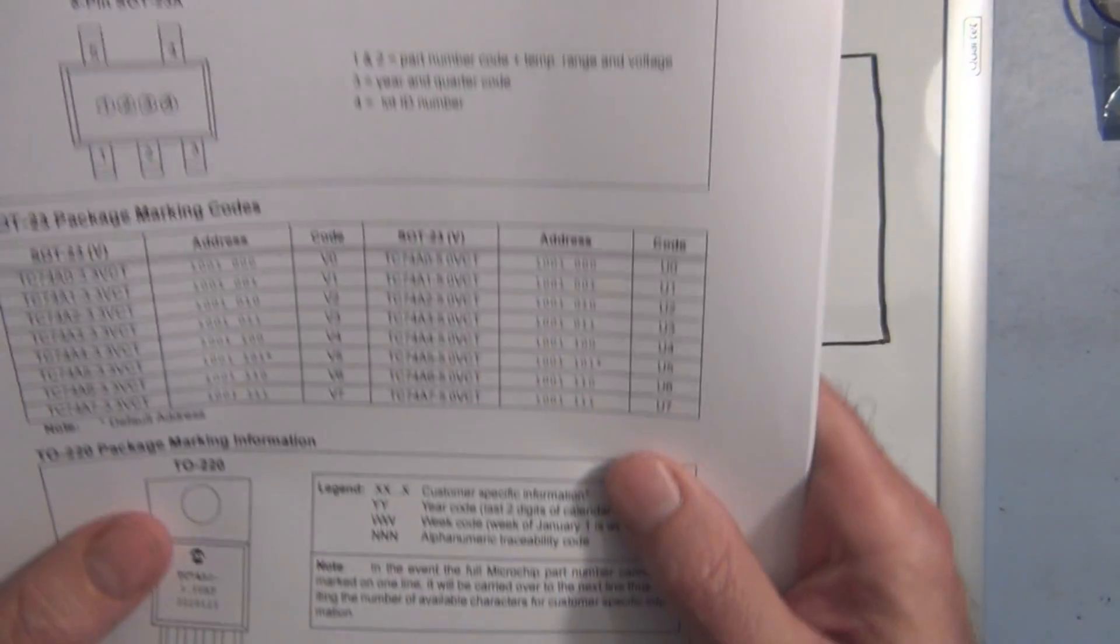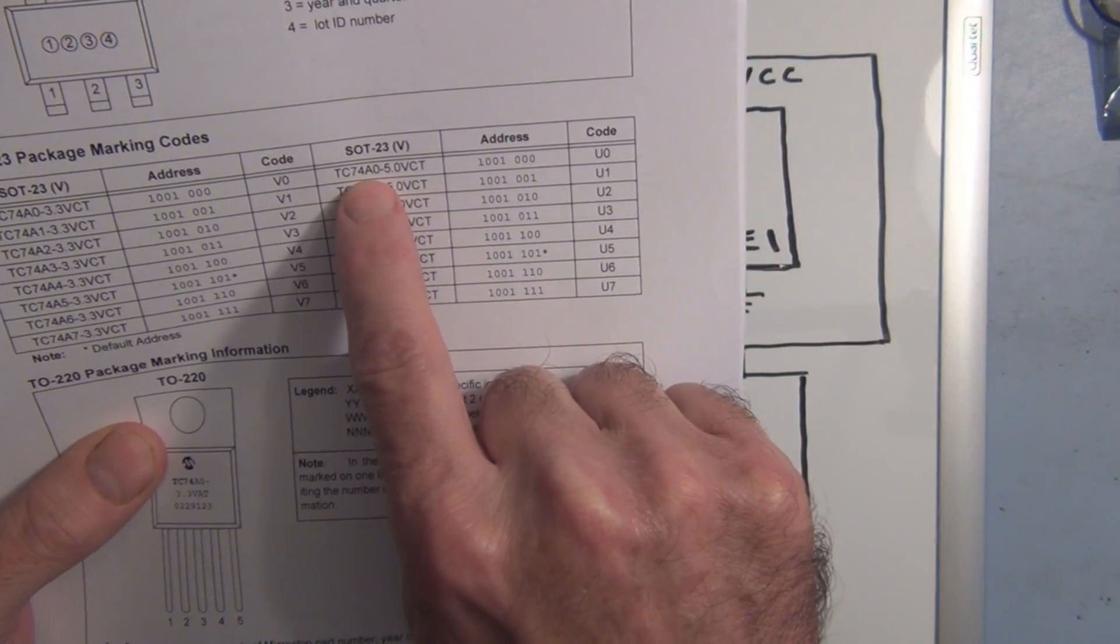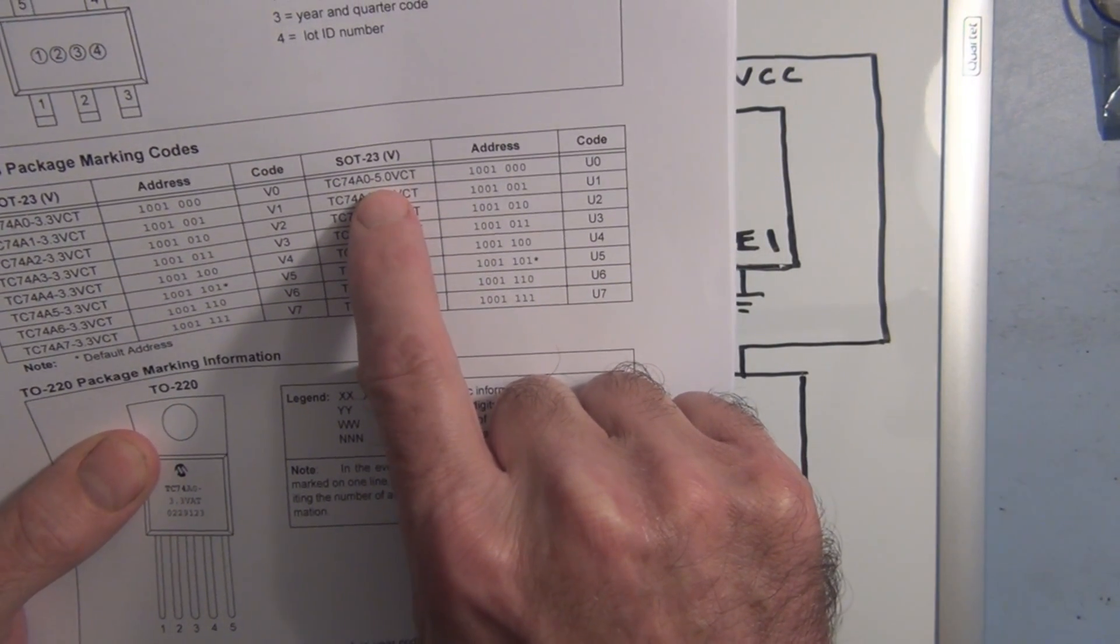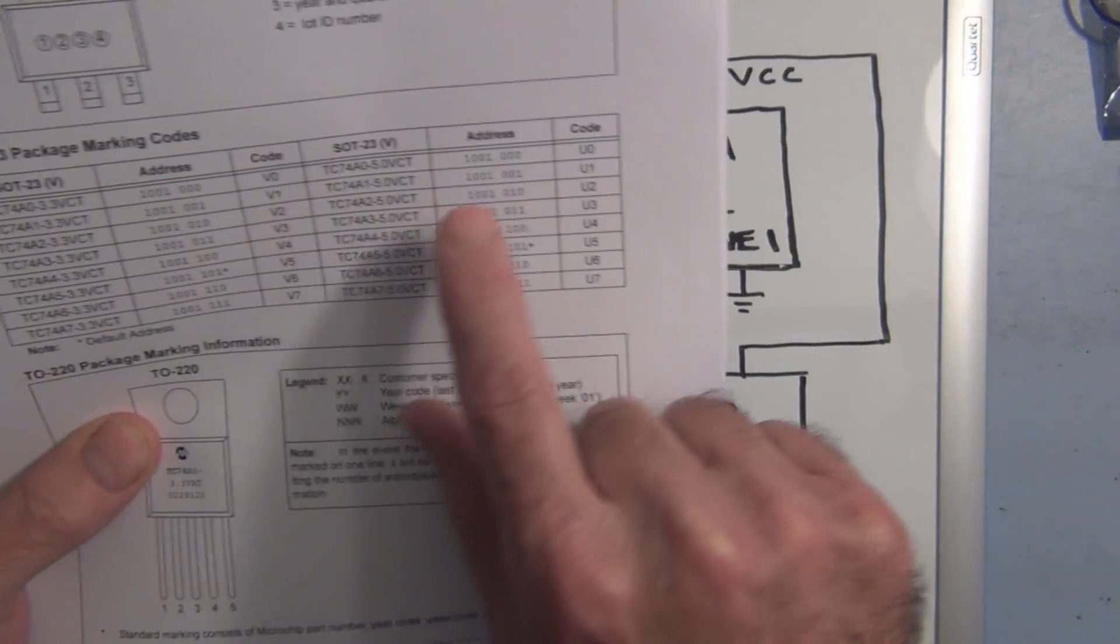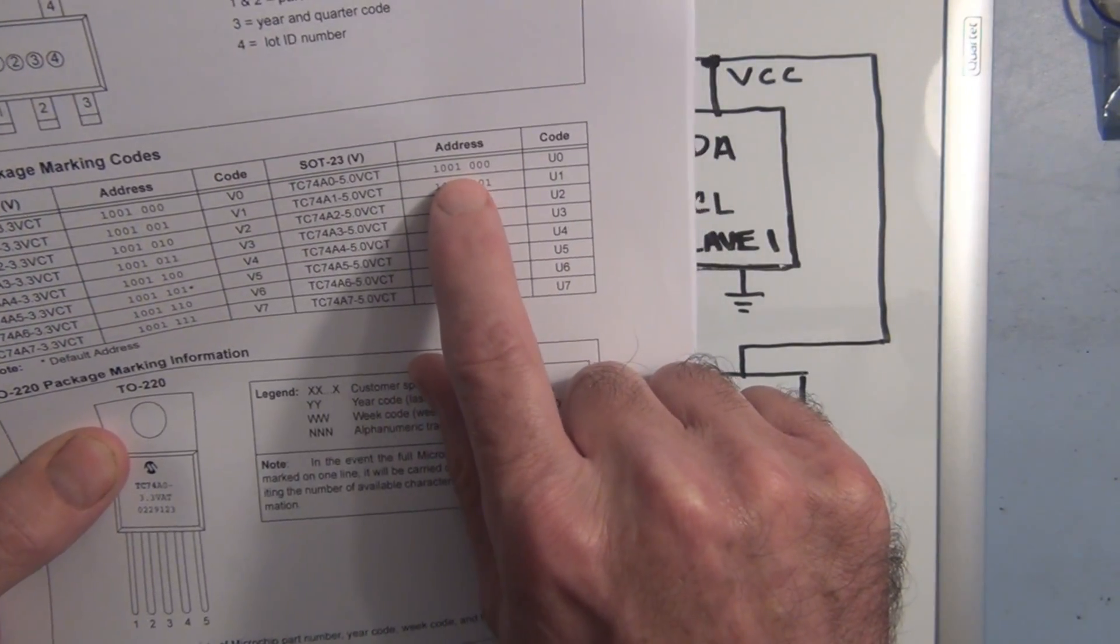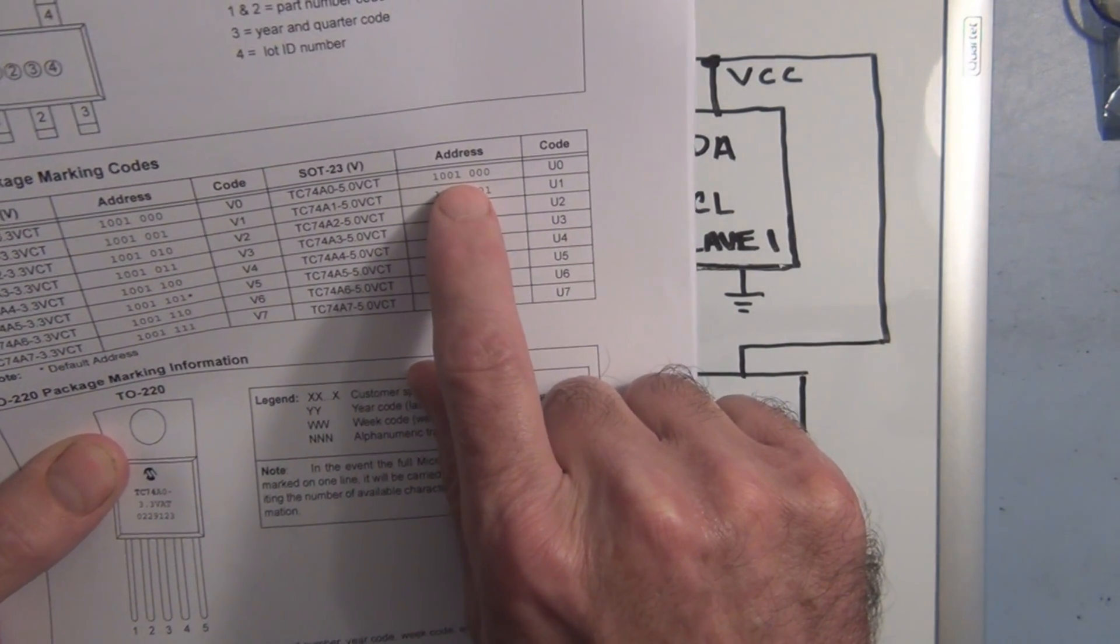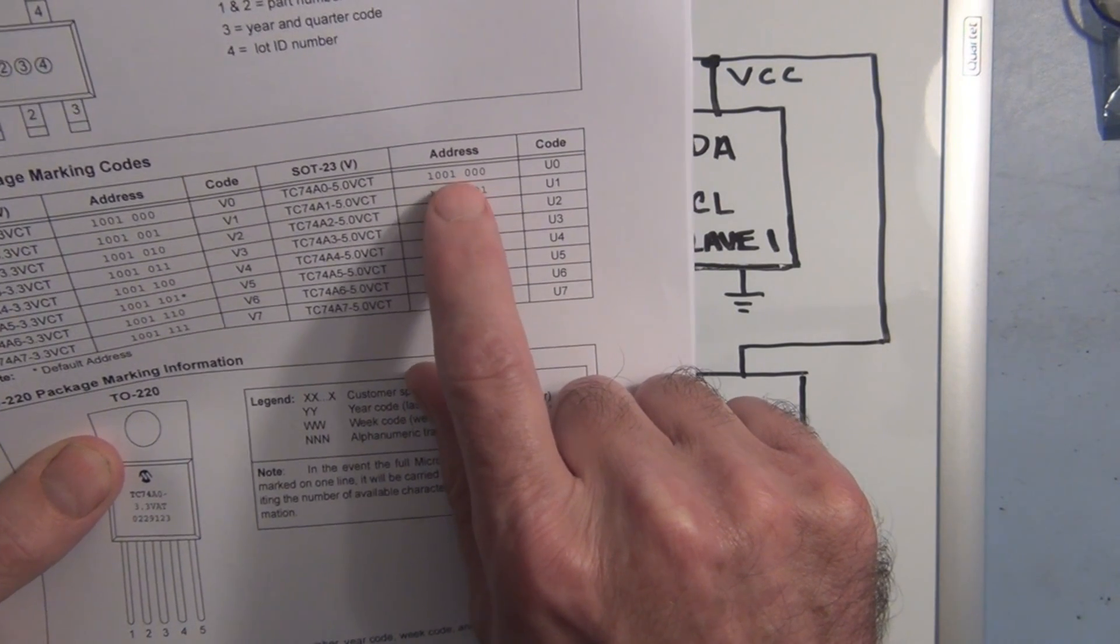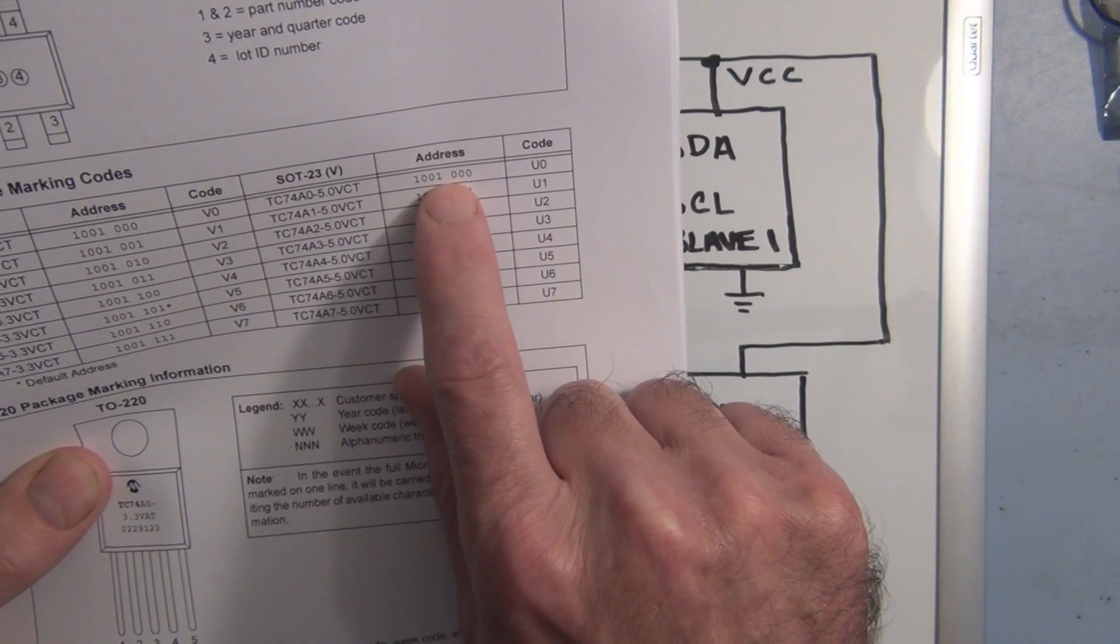So we can see from the data sheet, the one I'm actually using is this TC74A0-5. So this is a five volt version. They have 3.3 volt versions too. And the address for this is 72. So in order to talk to this digital temperature sensor, you have to address the 72 here. You have to be pointing at address 72.